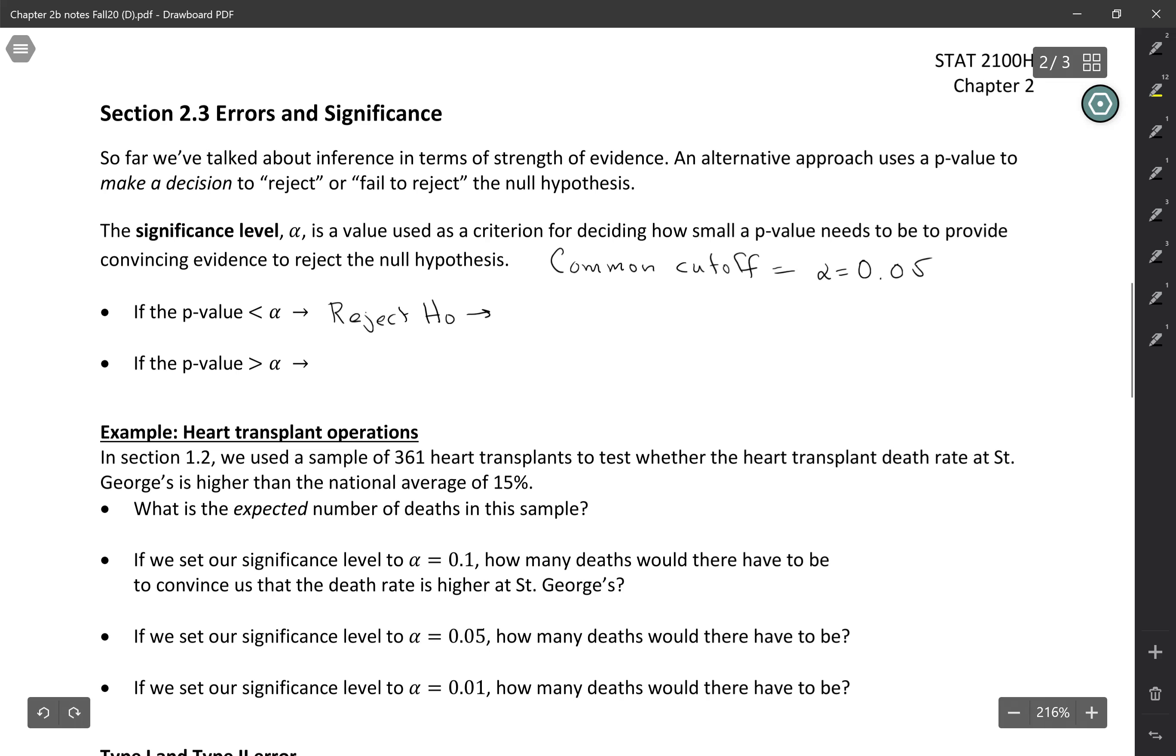And then your conclusion would be that you have sufficient evidence, right? You've set a cutoff and this is low enough. So you have sufficient evidence to conclude whatever your alternative hypothesis was. You've rejected the null and you've concluded the alternative. Whereas if your p-value is greater than alpha, greater than 0.05 or whatever that value is, then you would fail to reject the null.